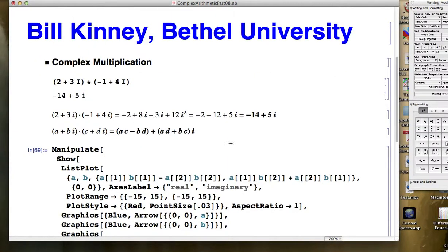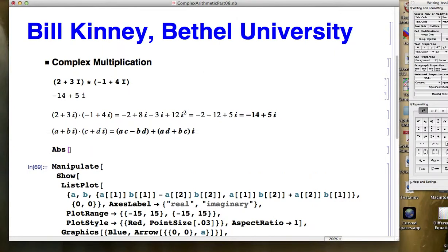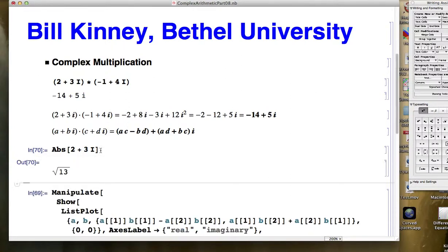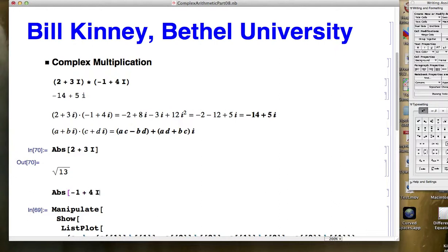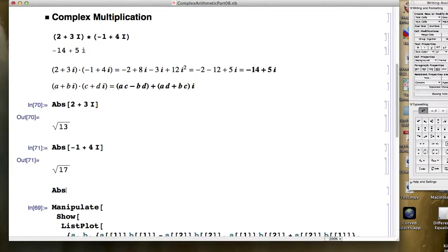Let's verify that here. I want to show you that Mathematica can be used to find the modulus of complex numbers. ABS stands for absolute value on Mathematica and can be used to find the modulus of a complex number. So the modulus of 2 plus 3i, if you think about it, would be the square root of the sum of the squares of the real parts and the imaginary parts. The square root of 4 plus 9 would be the square root of 13. For the other one, you're going to get the square root of 1 plus 16 is the square root of 17.